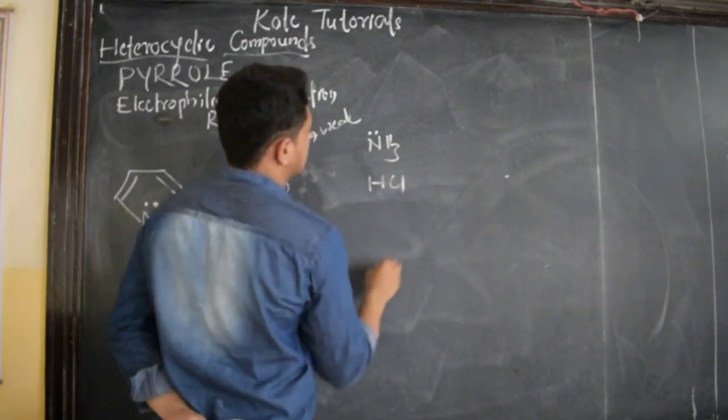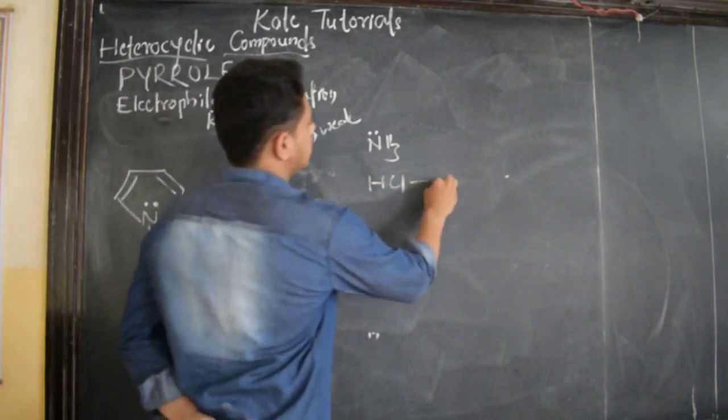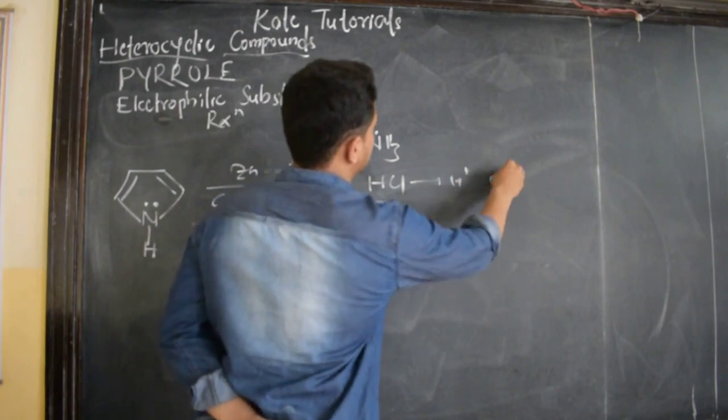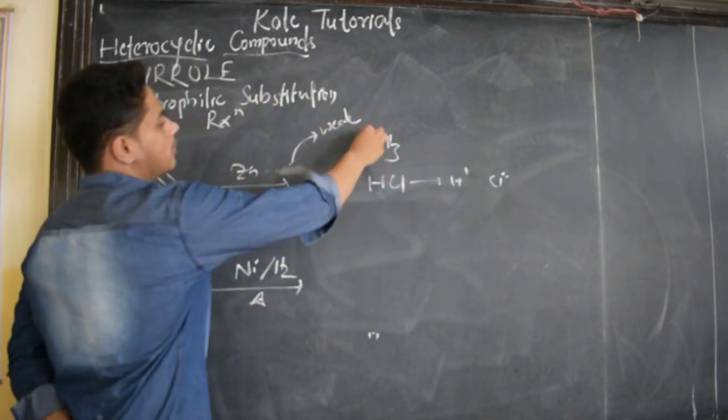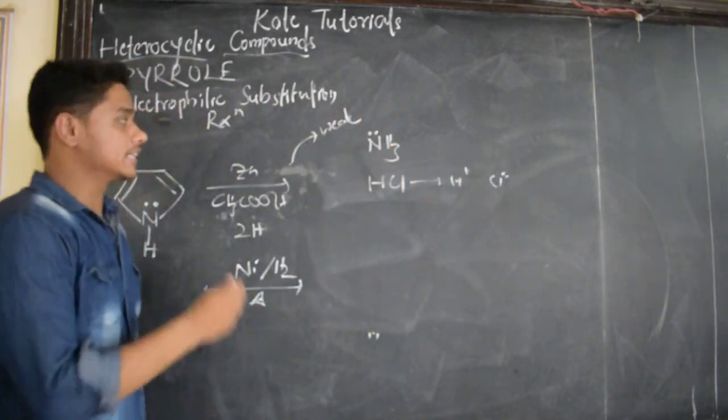Whereas, consider HCl. HCl is acid because it is going to give us H+ ion and Cl-. And this is ammonia. Because of this lone pair of electrons, it is basic in nature.